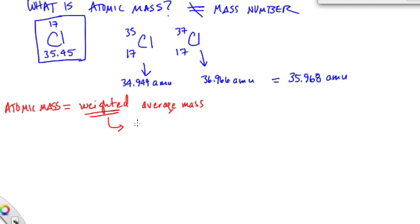By weighted, it means it includes both the mass and what we call the percent abundance of the element, or the isotope in this case.